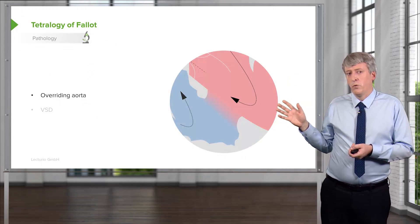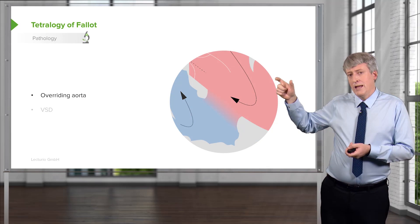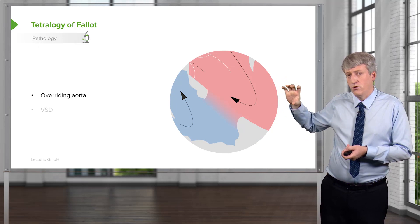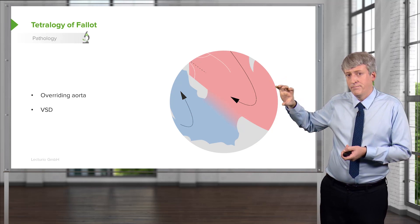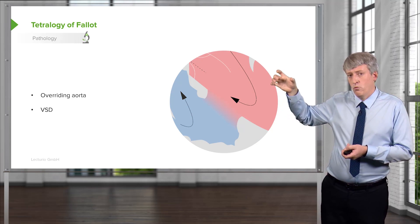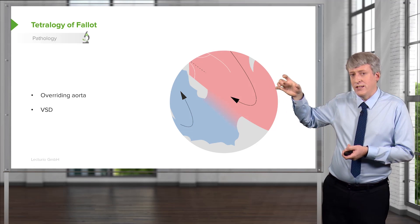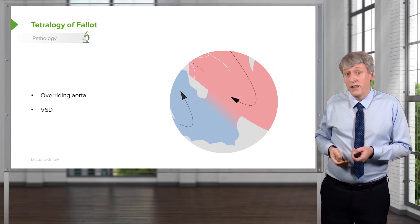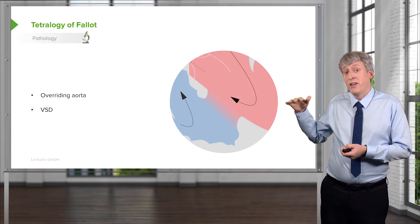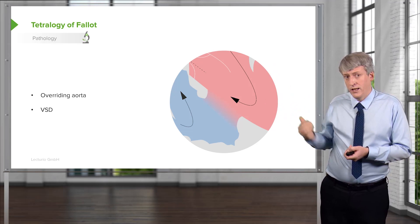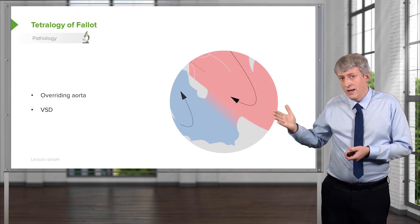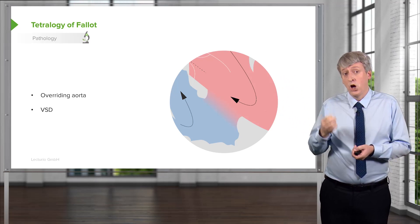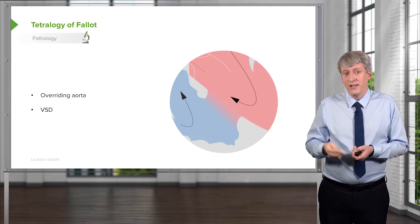Let's start with an overriding aorta. In these patients, there is a connection between the two ventricles called the VSD. The aorta rides over that VSD and allows the mixed blood to go into the aorta — that's why these infants are cyanotic. Some of that right-side blood is shunting to the left through that VSD and up into that overriding aorta. So two of the findings in tetralogy are overriding aorta and VSD.